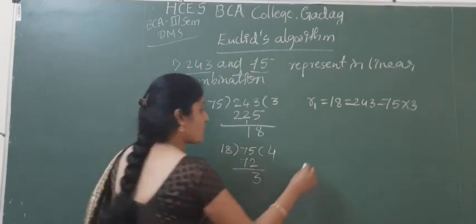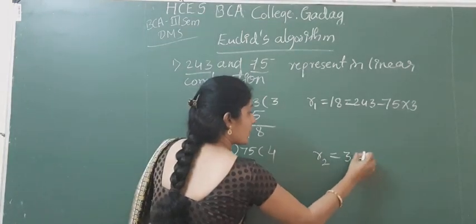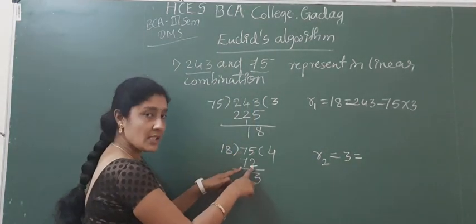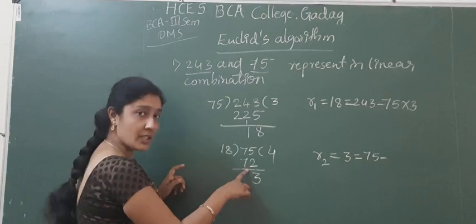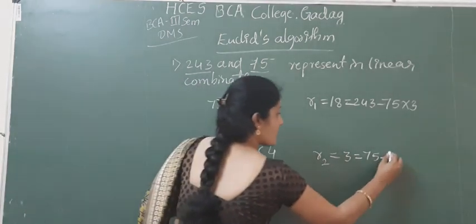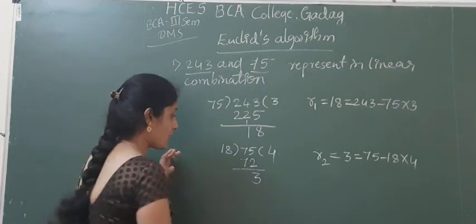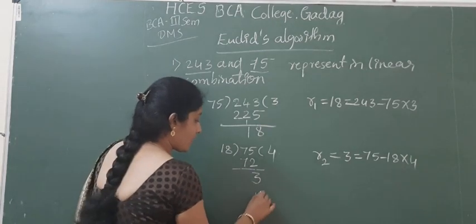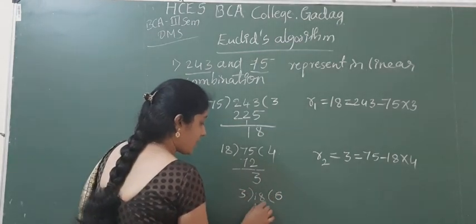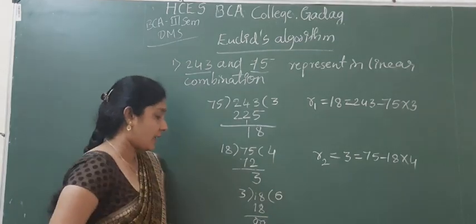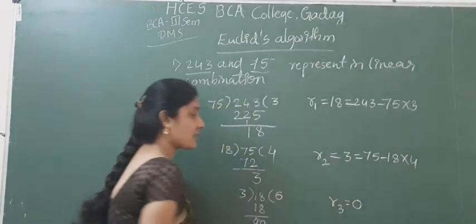What is the remainder equation? R2. R2 is the remainder of 3. So what is 3? It is 75 minus 72. And 72 is nothing but 18 into 4. So R2 = 75 − 18×4. Now one more division: 18 must be divided by 3. 18 divided by 3 — 3 sixes are 18. Finally, we got the remainder as 0. So R3 is equal to 0.